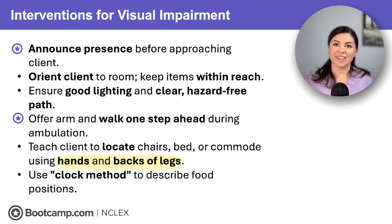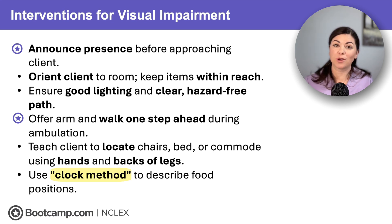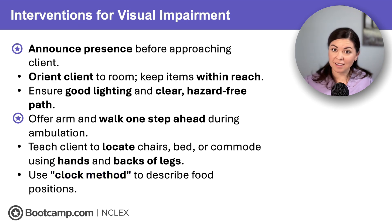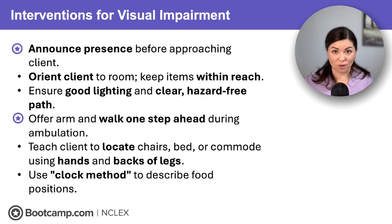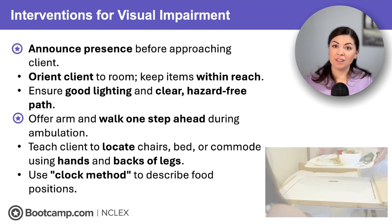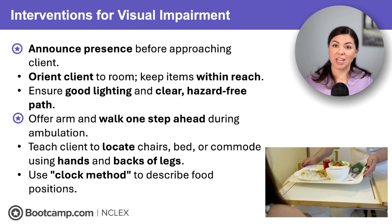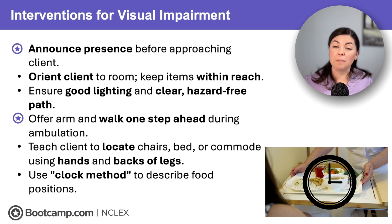And finally, during meals, describe food locations using the clock method to promote adequate nutrition. So if on NCLEX you have an option to feed a client with visual impairments, this is not correct. Instead, we should tell the client their mashed potatoes are at 3 o'clock to promote independence.